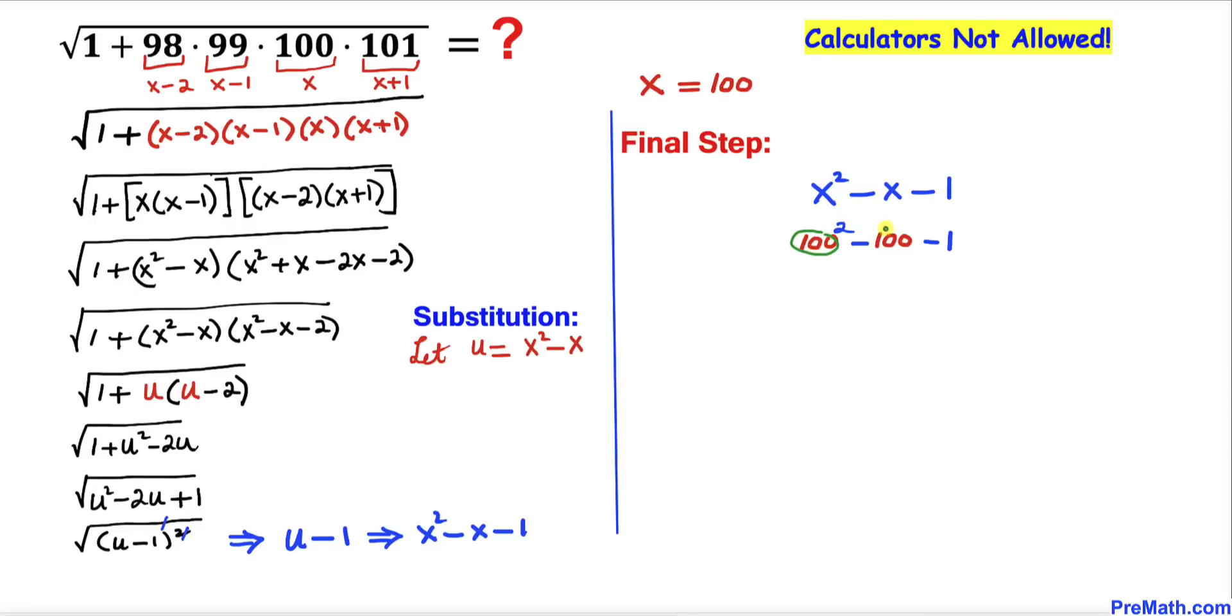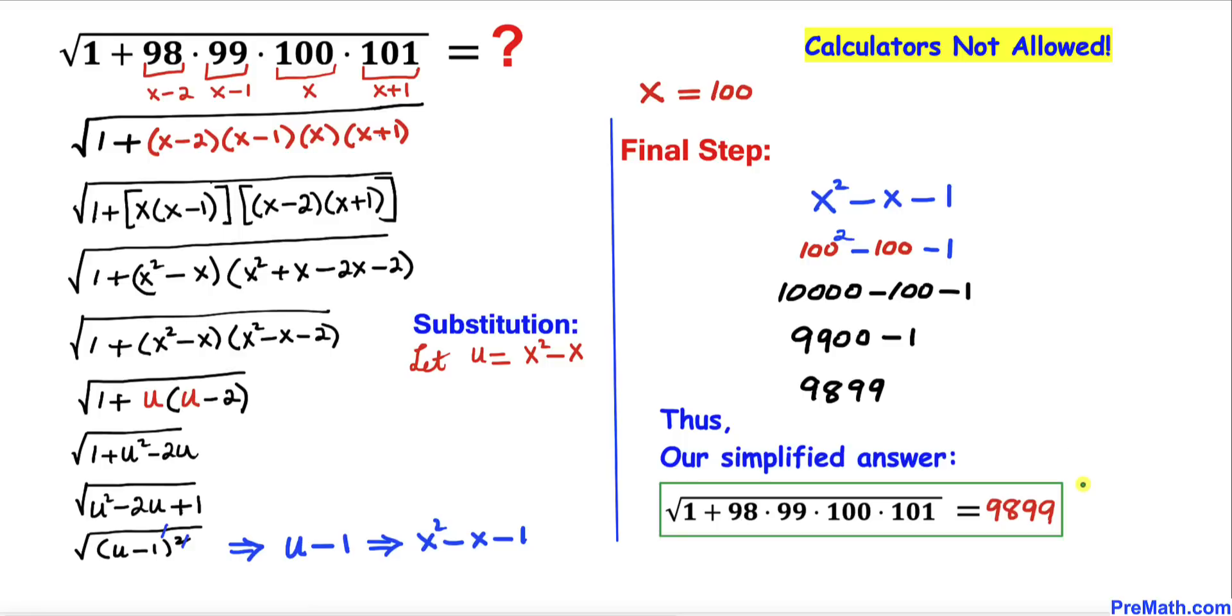In this next step I replace x by 100. Now 100 squared is the same as 10,000. Now 10,000 minus 100 is going to give us 9,900, and then minus 1. Finally our simplified answer turns out to be 9,899.